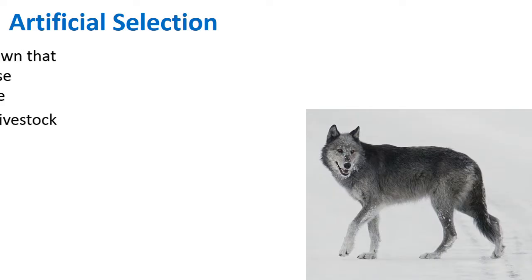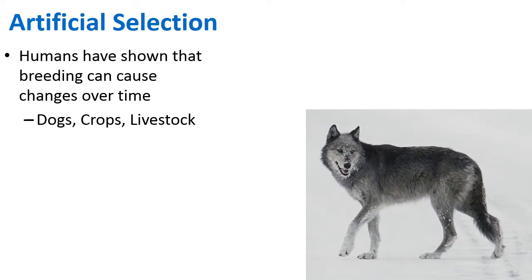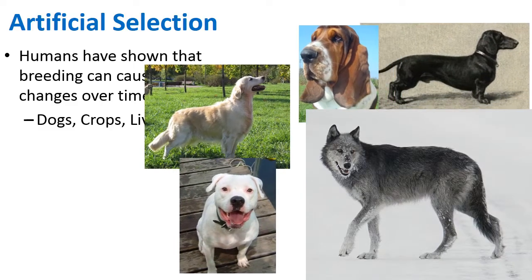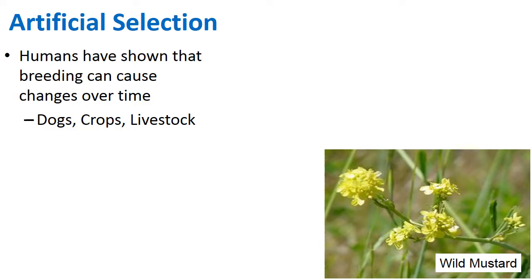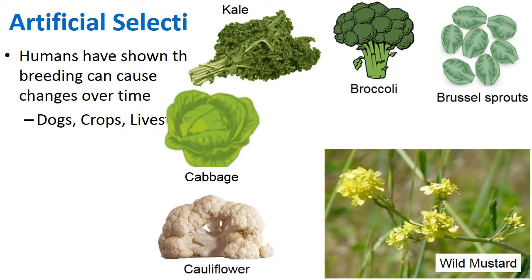Before getting into natural selection, I want to mention artificial selection — the selective breeding of dogs, crops, and livestock that we've been doing for centuries. A great example is wolves: through selective breeding we've bred all kinds of domesticated dogs. We also see this in plants — through selective breeding of wild mustard we've produced brussels sprouts, cabbage, kale, and other vegetables.